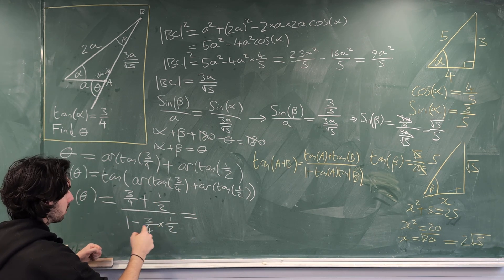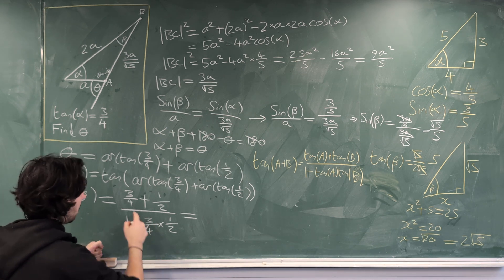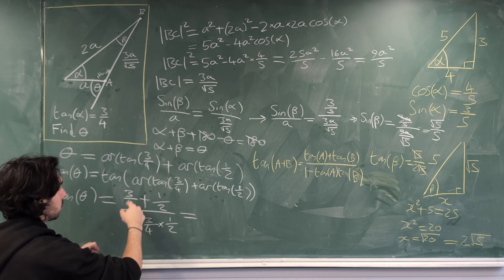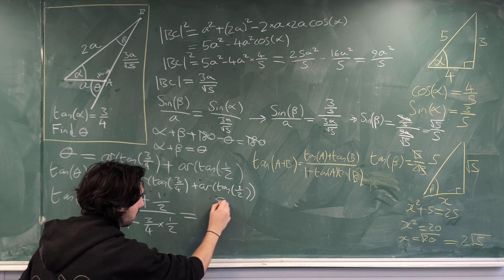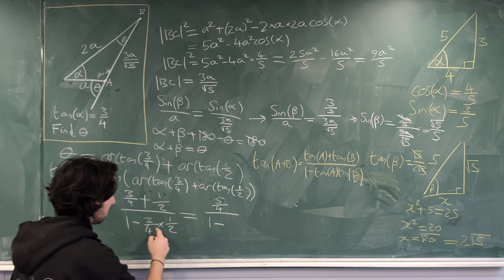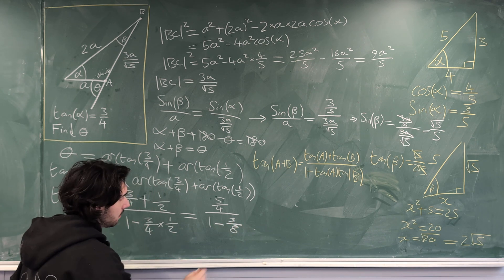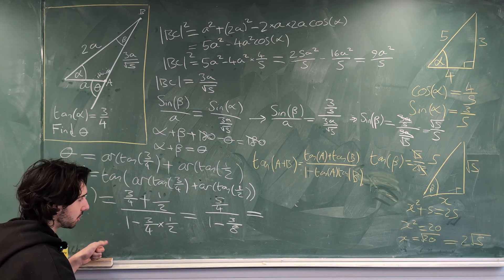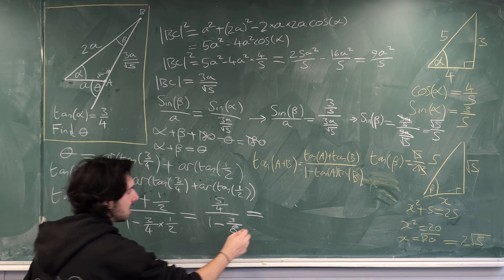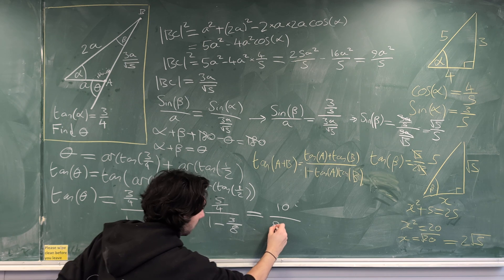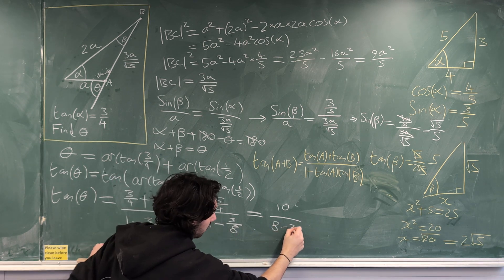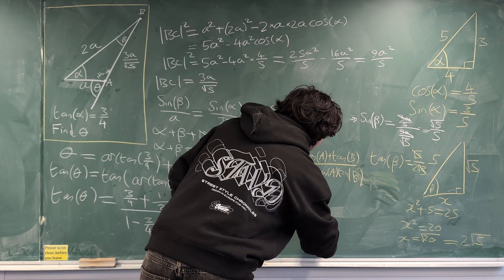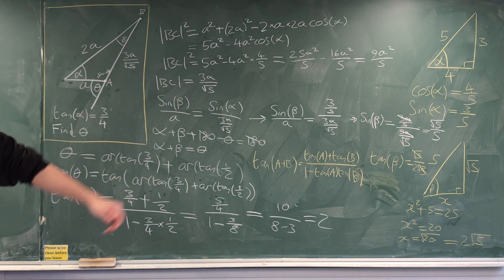Simplifying: the numerator is 3/4 + 2/4 = 5/4, and the denominator is 1 − 3/8 = 5/8. Multiplying top and bottom by 8: numerator becomes 10 and denominator becomes 8 − 3 = 5. So we get 10/5 = 2. Therefore tan(theta) = 2.